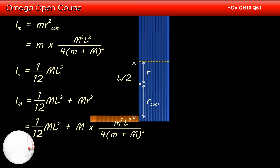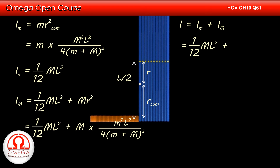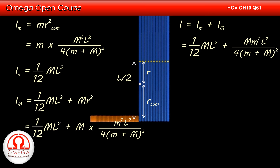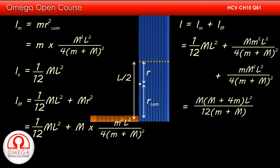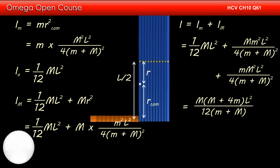Adding both moments of inertia, we get (1/12)ML² + M · m²L² / (4(m+M)²). Simplifying, we get M(M + 4m)L² / (12(m+M)²). This is the answer to part E.